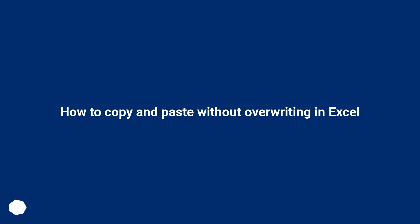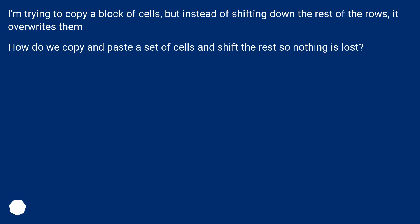How to copy and paste without overwriting in Excel. I'm trying to copy a block of cells, but instead of shifting down the rest of the rows, it overwrites them. How do we copy and paste a set of cells and shift the rest so nothing is lost?